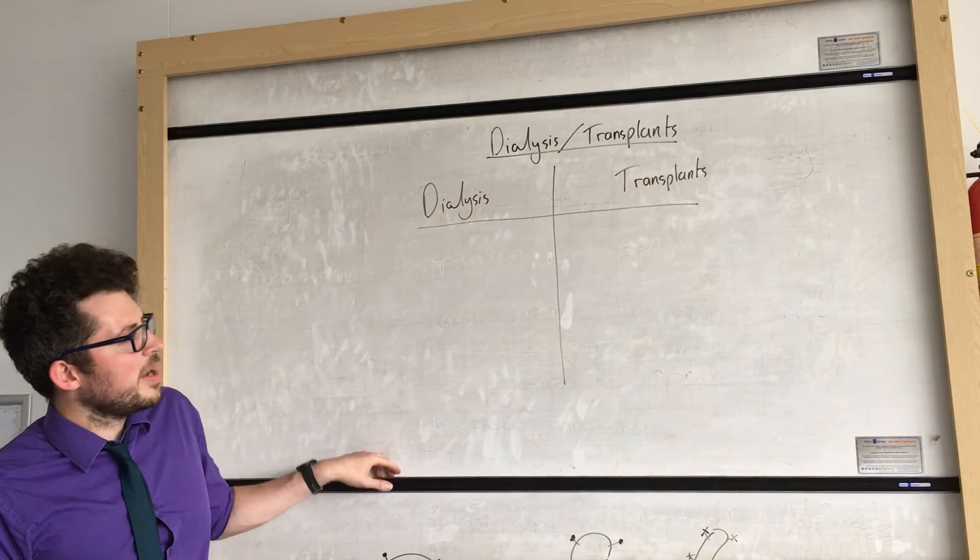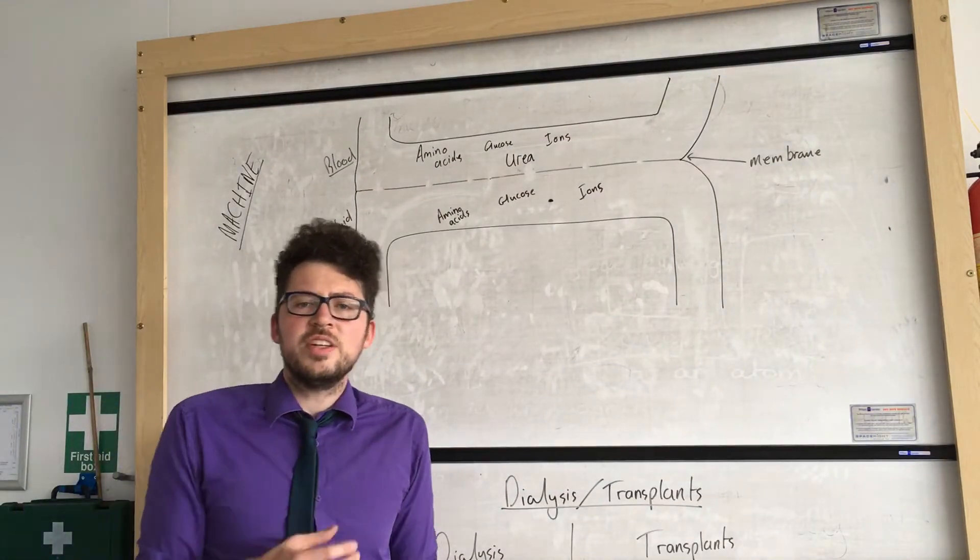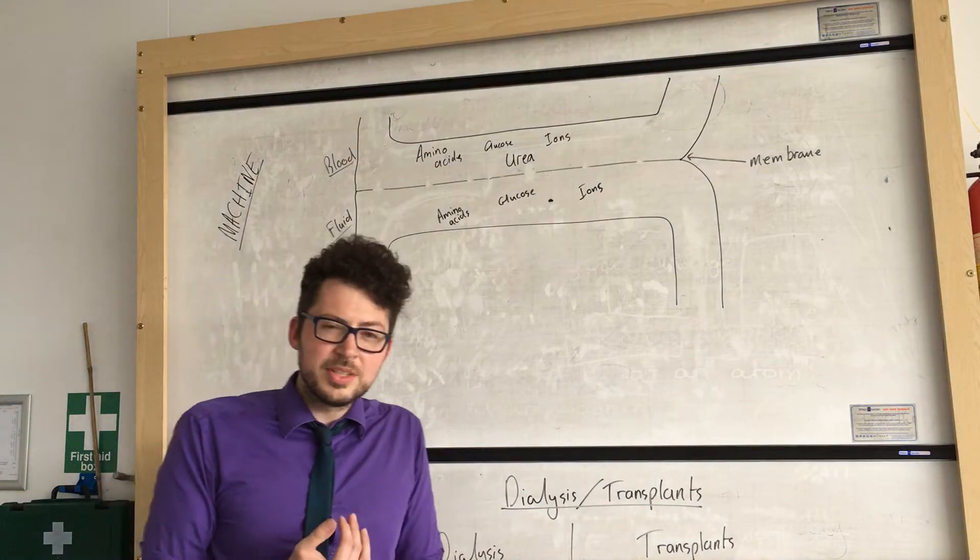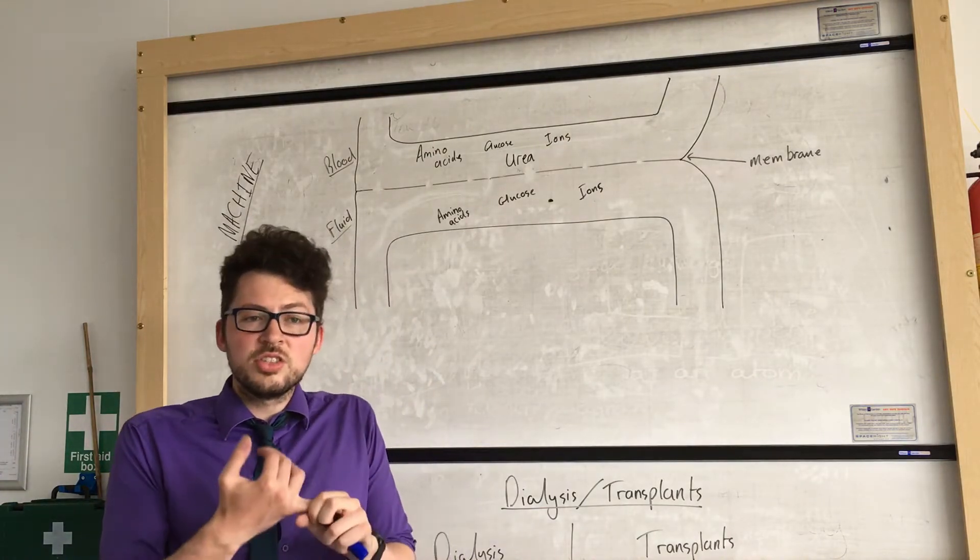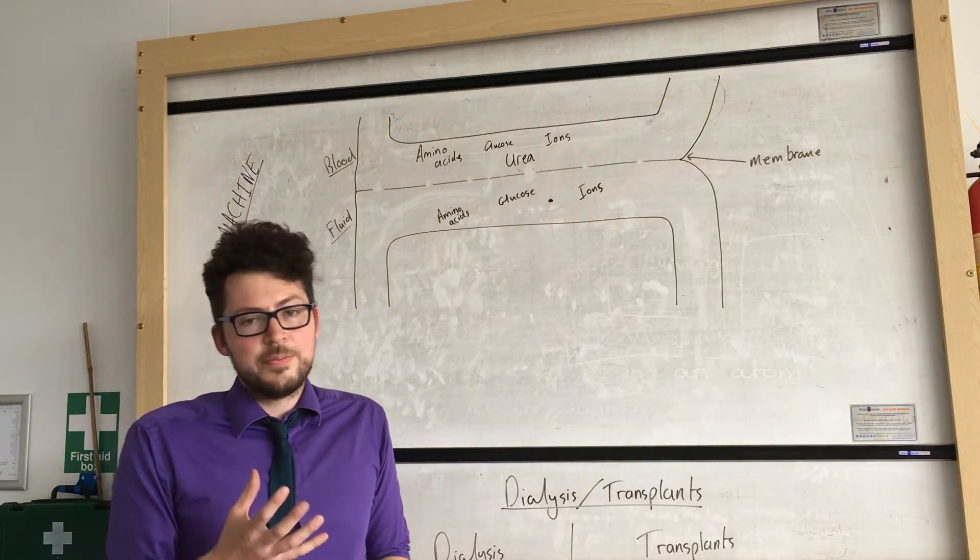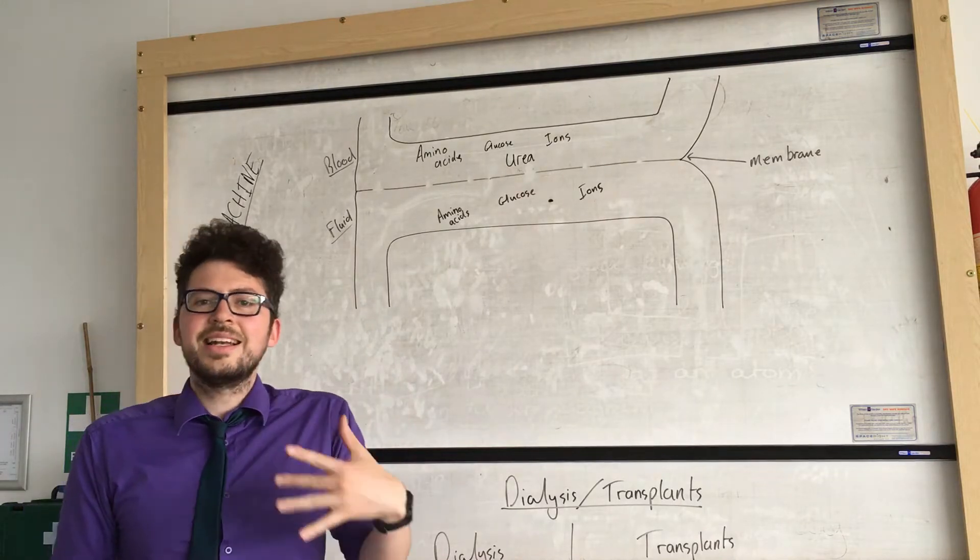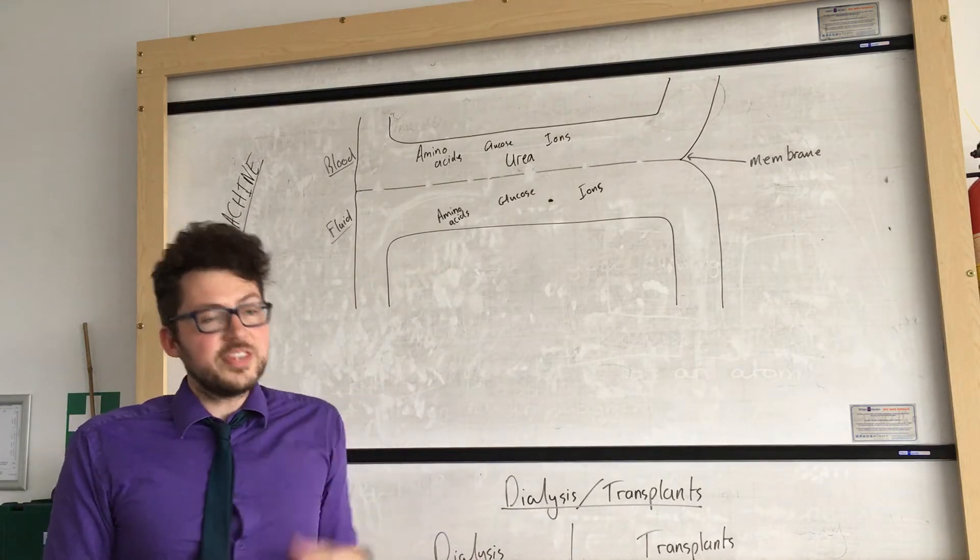So I'll start off by explaining how dialysis works. Now what dialysis involves is artificially cleaning the blood. Because if someone's kidney fails it means that they can't remove waste products and they'll build up and that could lead to death. So what a kidney dialysis machine does is it filters the blood and cleans the blood artificially.